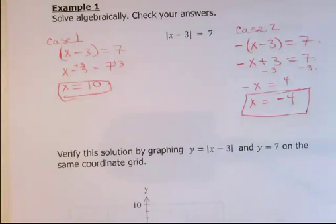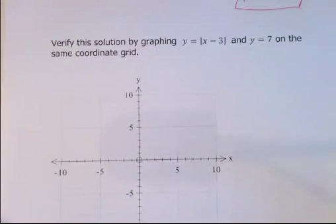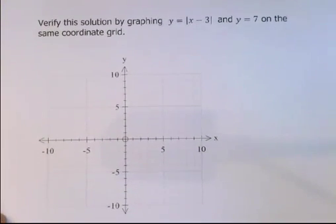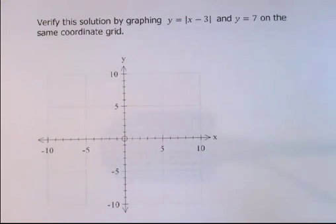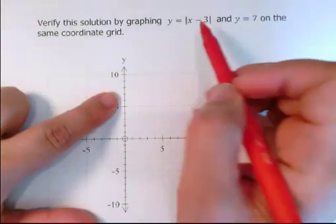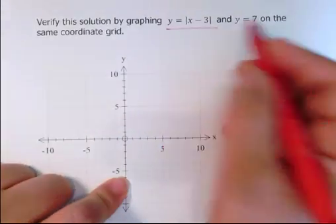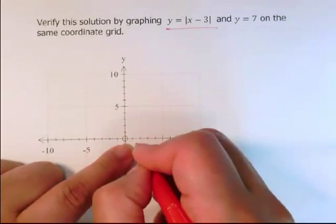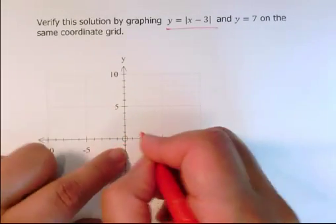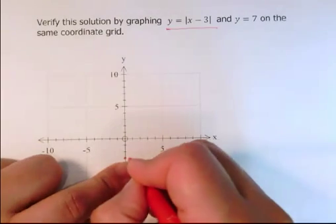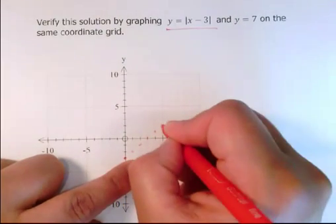Now I showed you the number line a couple seconds ago. What we're going to do to verify this is we're going to verify this graphically on a two-dimensional graph now, instead of one-dimensional. So the way to do this is to graph the absolute value of x minus 3. If we remember what that looked like, we plot our y-intercept, and then we go up one, over one.